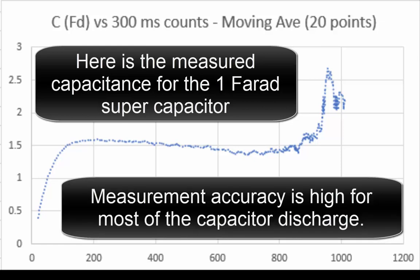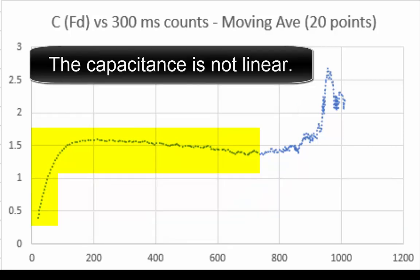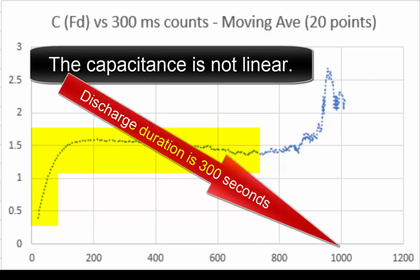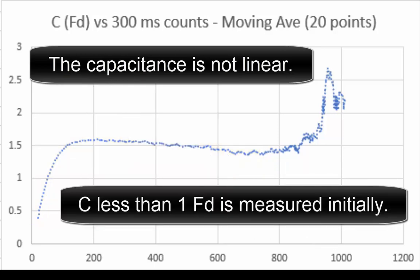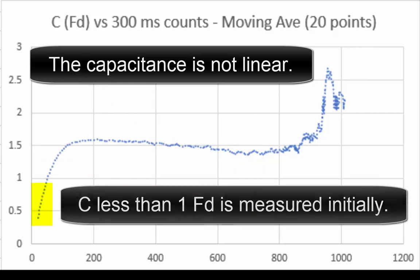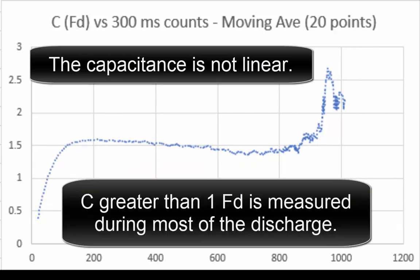Measurement accuracy is high for most of the capacitor discharge. The capacitance is non-linear. Discharge duration is 300 seconds. C is less than 1 farad measured initially, and C is greater than 1 farad measured during most of the discharge.